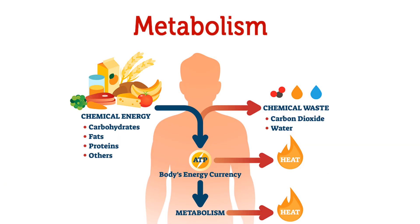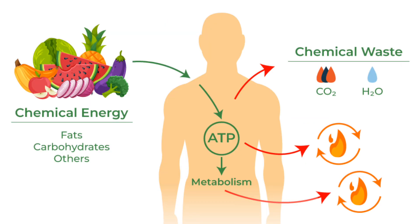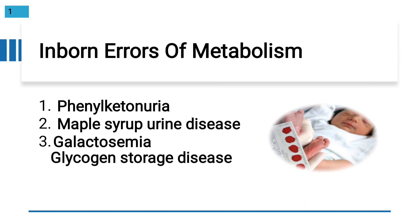Metabolism is a set of chemical reactions which occur in our body. It is categorized as anabolism and catabolism — catabolism is the breakdown, and anabolism is the construction of useful products in the body.